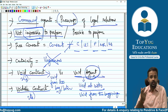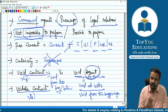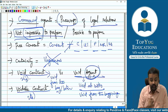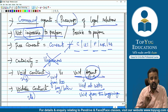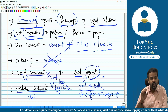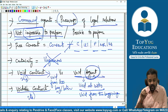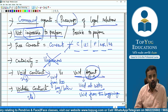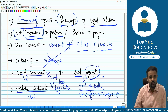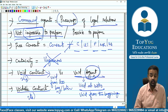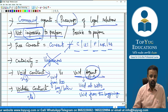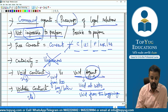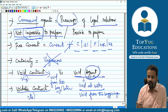Section 2(i) talks about voidable contract. Voidable means there is an option to make the contract void or keep it valid. That option is given to the aggrieved party — the party who has suffered. For example, if consent is obtained by coercion, the person on whom coercion is applied is the aggrieved party, and that party will have the option to decide whether to make the contract void or continue with it as valid.